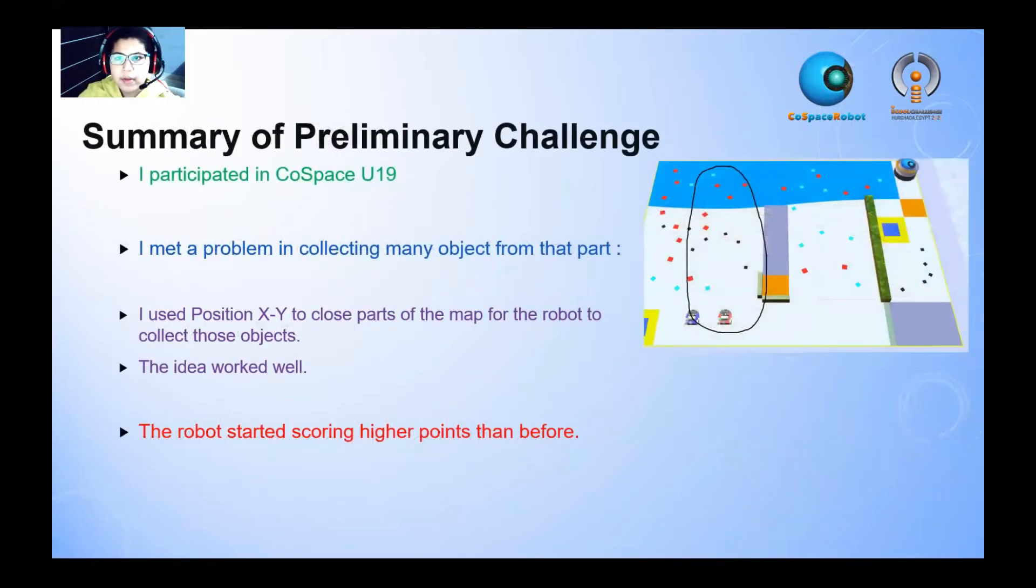Summary of Primary Challenge. I participated in Co-Space U19, which is under 19. I met a problem and collected many objects from this part, which I call the left part. I used position X and Y to close parts of the map for the robot to collect those objects and my idea worked well. The robot started scoring higher points than before.